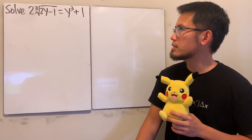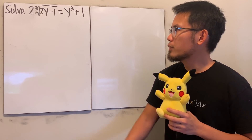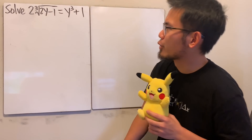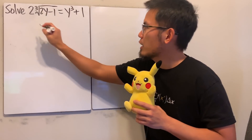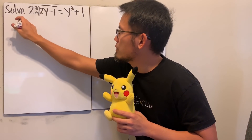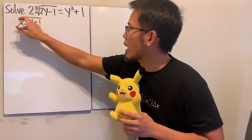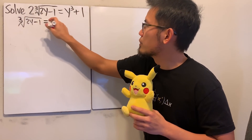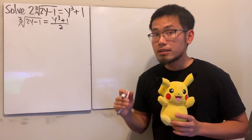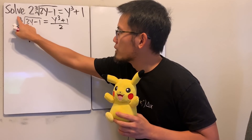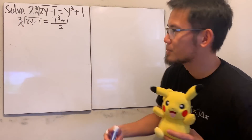Alright, so now let's see how we can approach this. If you really want to just isolate the cube root, maybe you want to divide by 2 on both sides. So we can look at this as the cube root of 2y minus 1 equals y to the third power plus 1 over 2. But again, do we really want to raise both sides to the third power? I really hope that's not the case.